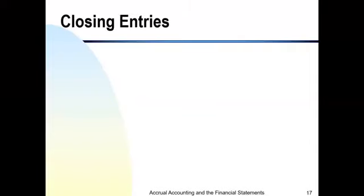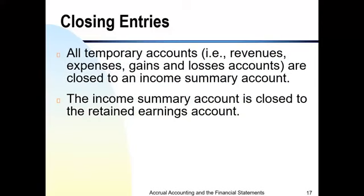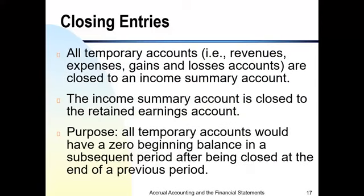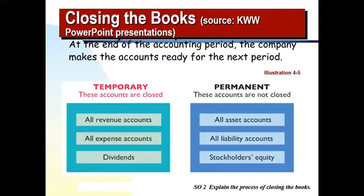After preparing the financial statements, the next step is to prepare closing entries, which is the second-last step of the accounting cycle. In closing entries, we close all temporary accounts. Temporary accounts include revenues, expenses, and dividends. Permanent accounts — also called real accounts — are assets, liabilities, and owners' equity, and these are not closed.